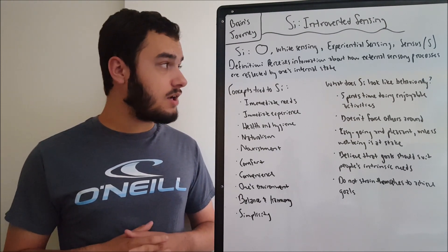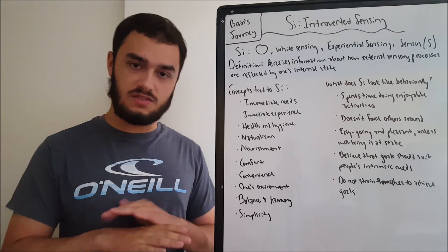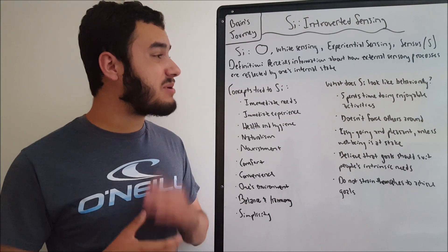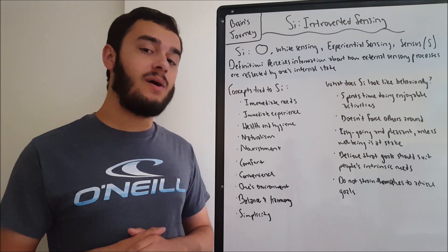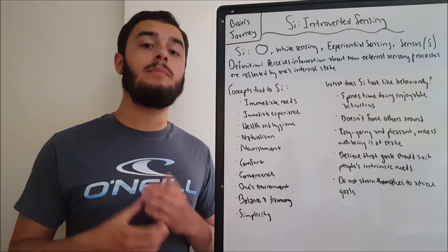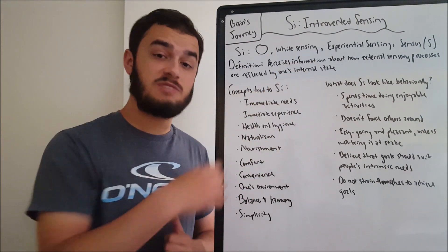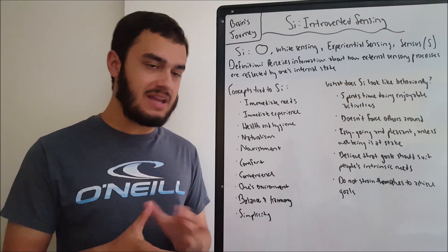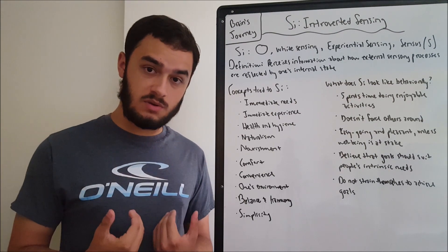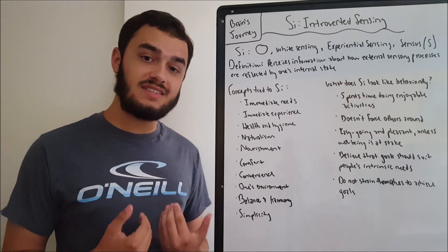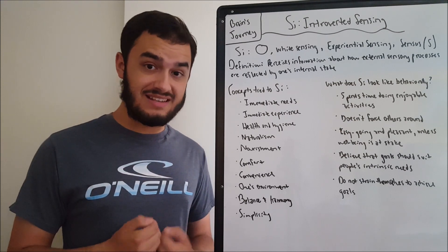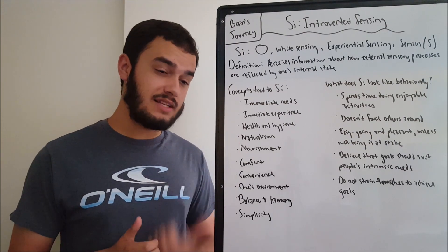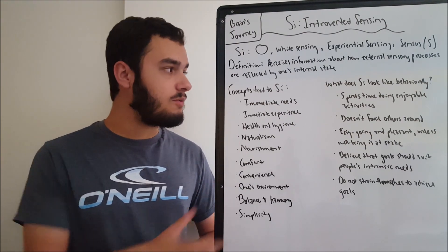So the definition, the logical definition, just to kick this video off. What is SI directly? As we can see from the board, SI perceives information about how external sensory processes are reflected by one's internal state. So this ties back to the experiential part. Unlike SE, which is more action-based, more force-based, this one is more about one's subjective experience, how one is subjectively experiencing senses and external processes in the environment.